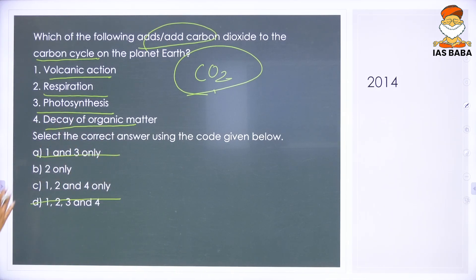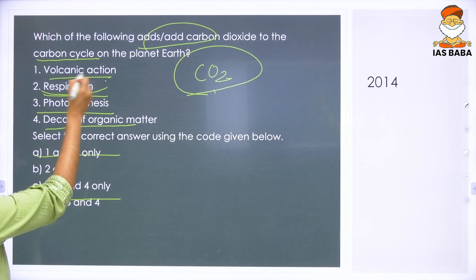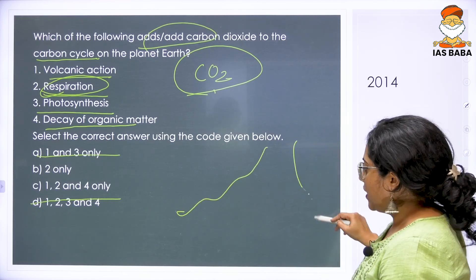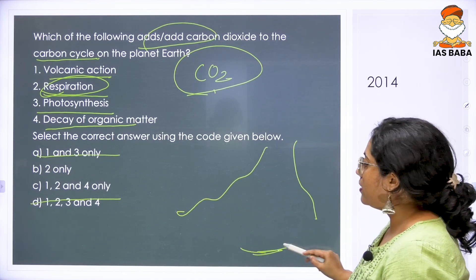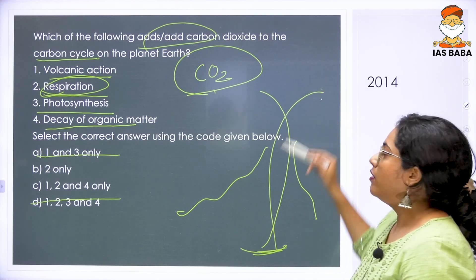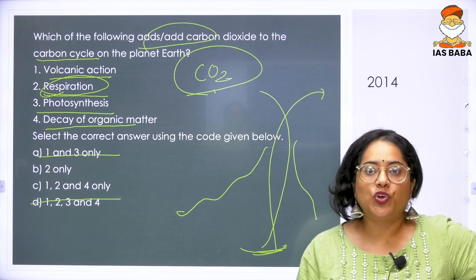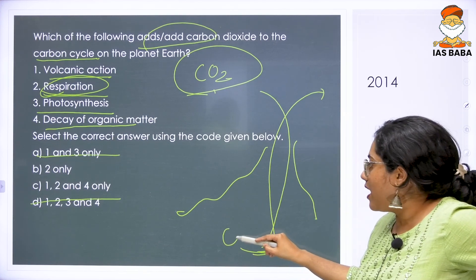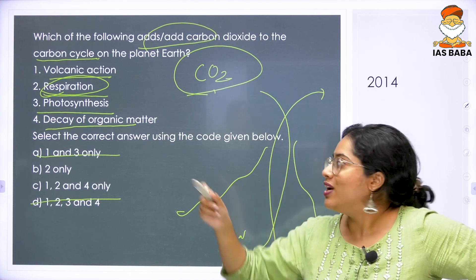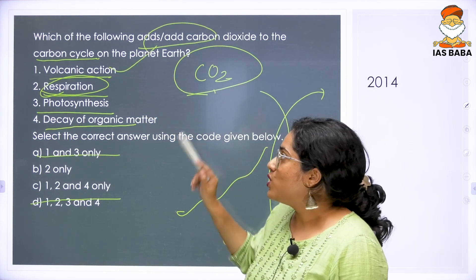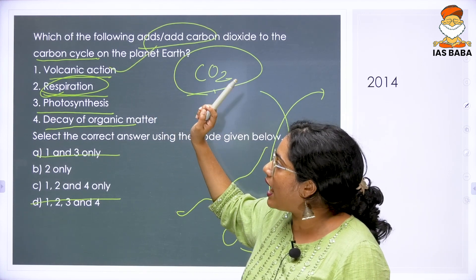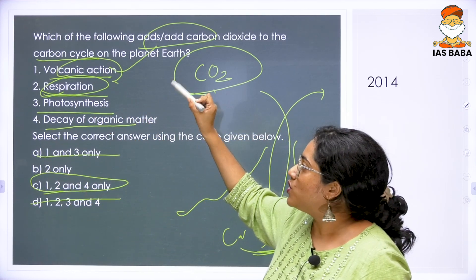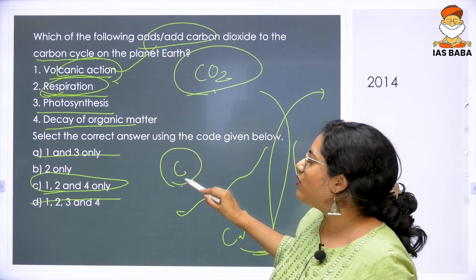You are left with options 1, 2, and 4. Option 2 is respiration. Look at volcanic action — whatever is deep under the earth comes out with so much energy and heat, and the carbon and carbon compounds underneath come out as well. So volcanic action is also valid. Your option which has 1 and 2 in it is option C — 1, 2, and 4.